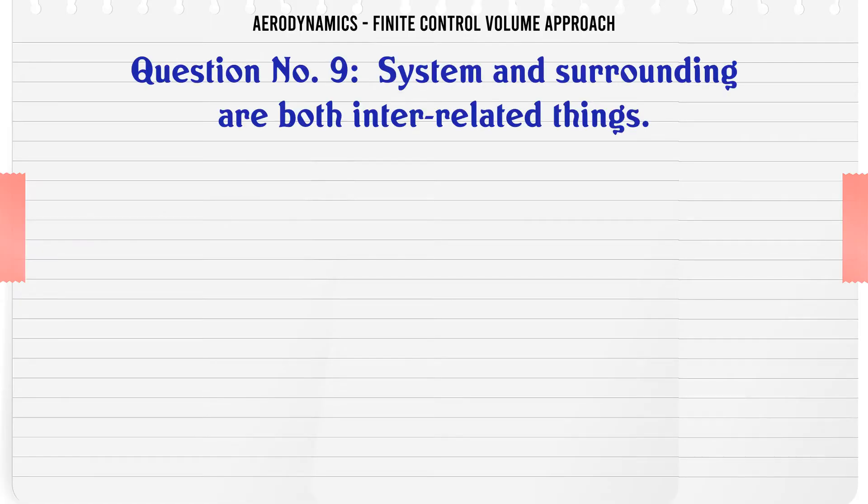System and surrounding are both interrelated things. a. True. b. False. c. d. The correct answer is true.